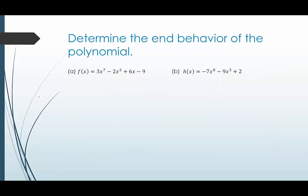In our first two examples, we're given two polynomial functions and want to determine their end behavior. In letter a, since the polynomial is written in standard form, we can see that the degree is seven — the largest exponent — and the leading coefficient is three.